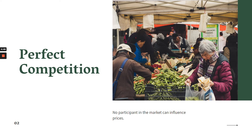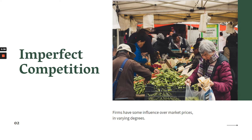In perfect competition, there is no participant in the market that can influence prices. For example, if you are selling okra, you cannot sell your okra at a higher price than your neighbor. If your neighbor sells at 5 pesos per bundle while you sell at 50 pesos per bundle, consumers will obviously buy from the neighbor at 5 pesos. So you cannot dictate your price — you have to go along with the existing price in the market. That is what we call perfect competition.